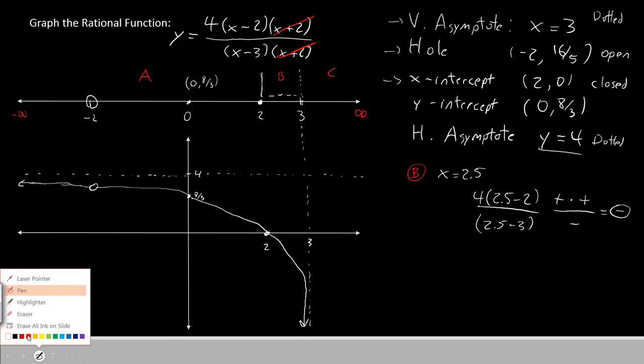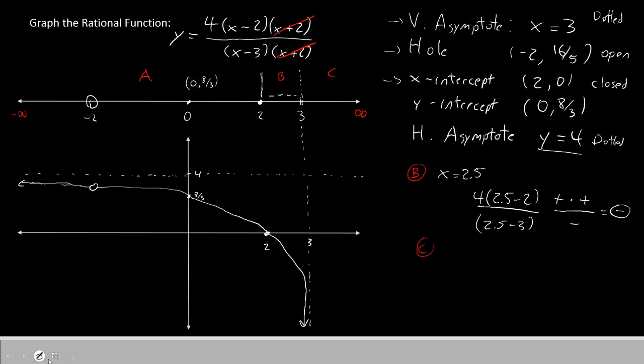Now on to section C. Let's pick an x value that is between 3 and infinity. How about 4? If we're going to put in 4 everywhere in the rational function where you see x, we'll have 4 times (4 minus 2) divided by (4 minus 3). We know that 4 is a positive number. 4 minus 2 is definitely greater than 0, so that's positive. And 4 minus 3 is also a positive number.